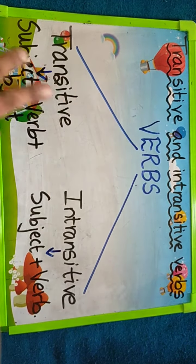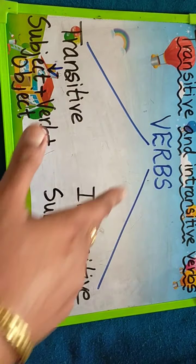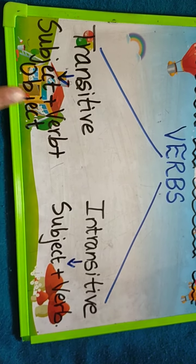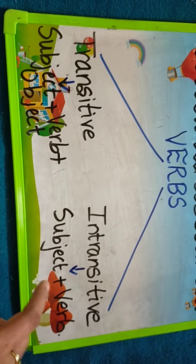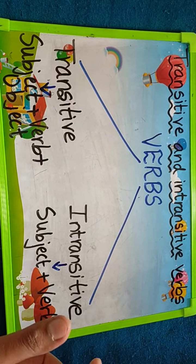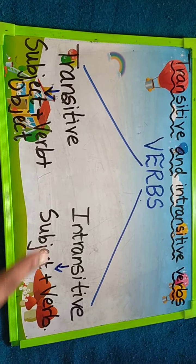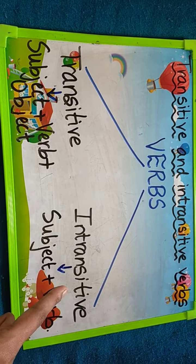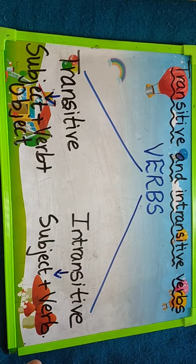I hope students it is now clear. Verbs are action words. There are two types of verbs: transitive and intransitive. When there is an object given in a sentence — subject plus verb plus object — then that verb is known as a transitive verb. When there is only subject and verb and there is no object, then it is an intransitive verb. Whenever you are looking for transitive and intransitive verbs, keep this structure in mind: look for the subject, verb, and object. If all three are there, it is transitive. If only subject and verb are there and no object is mentioned, then it is an intransitive verb.